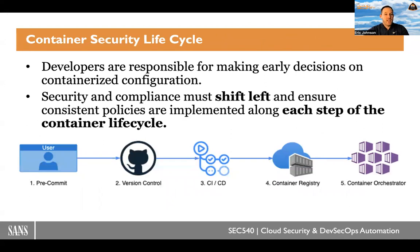Summarizing NIST SP800-190 is this diagram. The big difference between traditional operations and our container security workflow is that we have users making configuration and operations level decisions very early on in the lifecycle during the pre-commit stage. Our engineers are choosing which base images they're going to inherit from in the very first line of a Docker file, which can impact the runtime and production. We can then look at what security steps we can include in an automated CI/CD pipeline, as well as opportunities for continuous security inside of the container registry and the orchestrator itself.